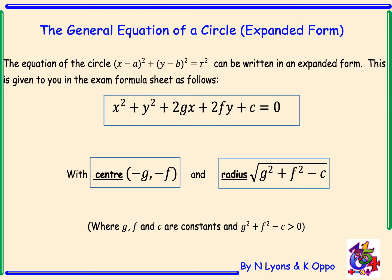To get the radius we square g, square f, subtract c and then take the square root. Please note, for a circle to exist and for a radius to be there, g squared plus f squared minus c must be greater than 0.